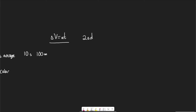The third equation is D = AT²/2 + V_initial × time. These three equations all relate velocity, acceleration, distance, and time in slightly different ways. Depending on which variables you have and which you want to calculate, you use any one of these equations. Essentially, each equation is set up so that you don't need a certain variable to solve it.